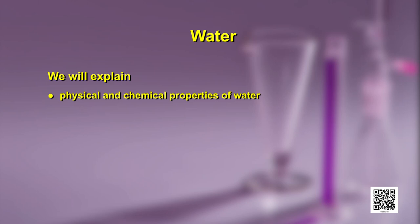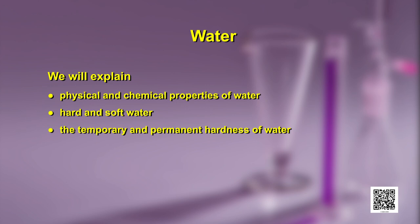Welcome viewers to this episode on Hydrogen Part 3, which is based on Unit 9 of Class 11th Chemistry Book Part 2. In this episode, we will discuss a very important compound of dihydrogen — water. We will explain the physical and chemical properties of water, as well as hard water and soft water. We will also describe the temporary and permanent hardness of water and the methods of removing it.